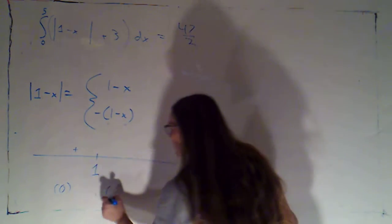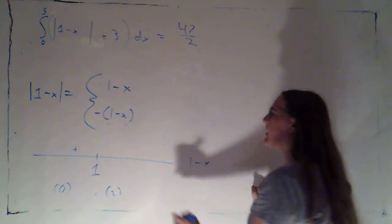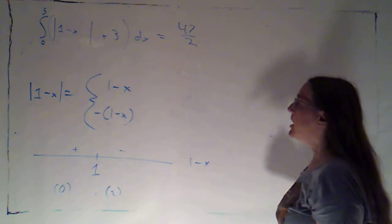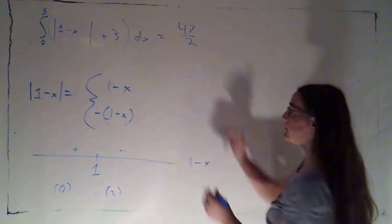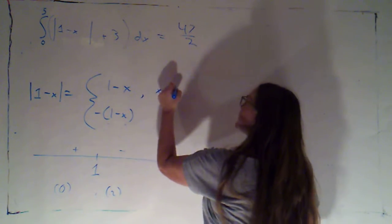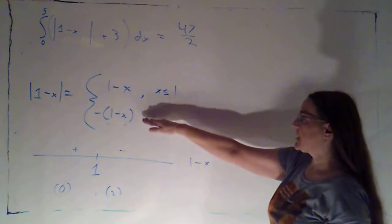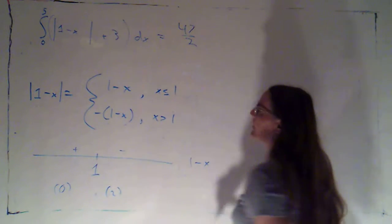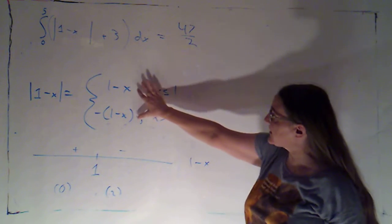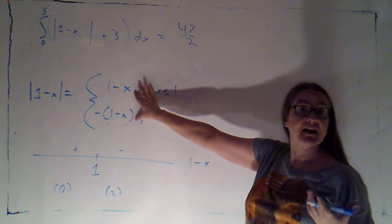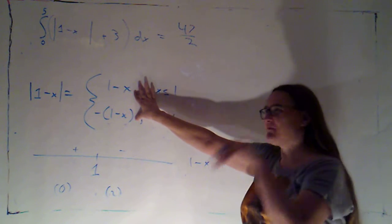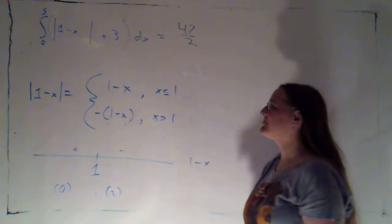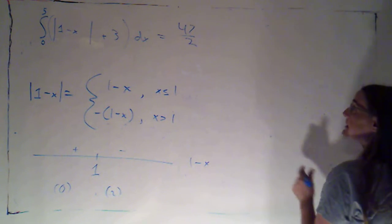If I plug in a number that's bigger than 1 like 2, 1 minus x will be negative. So I can see I'm using this rule if x is less than or equal to 1, I'm using this rule where I take the opposite if x is bigger than 1. And both rules actually agree at 1 because that's where this quantity is 0 and positive 0 and negative 0 are exactly the same.